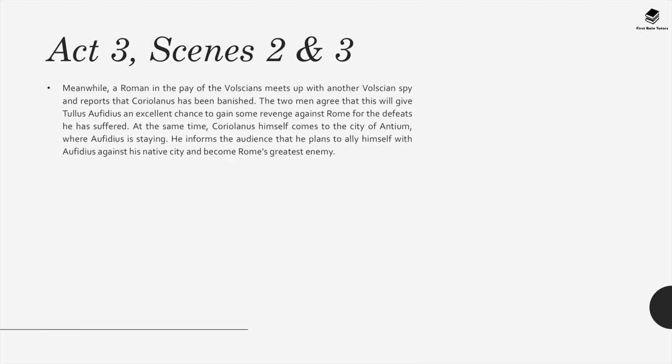Meanwhile, a Roman in the pay of the Volscians meets up with a Volscian spy and reports that Coriolanus has been banished. The two men agree that this will give Tullus Ophidius an excellent chance to gain revenge against Rome. At the same time, Coriolanus himself comes to the city of Antium, where Ophidius is staying. He informs the audience that he plans to ally himself with Ophidius against his native city and become Rome's greatest enemy.